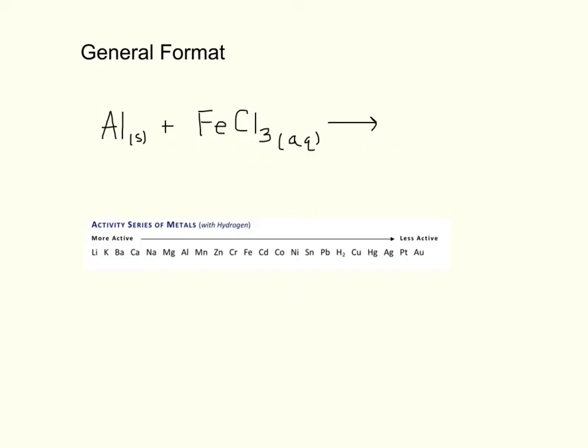So let's take an example here and think through how we actually rationalize this. One piece of reference material that you'll have to make sure you have available is the activity series. The activity series gives us a list in order of metals from the most active, lithium here is the most active, to the least active, in this case gold.